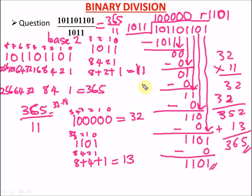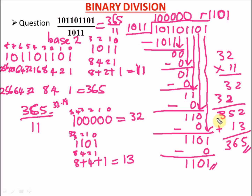You'll notice that dividing in base 10 is different from binary division. This is how you do binary division and confirm your answer is correct when there's a remainder — unlike the first video where there was no remainder. Thank you for staying tuned. If you didn't understand any part, please comment and I'll help. Don't forget to subscribe, share, and like. See you in the next class — you are destined to win!